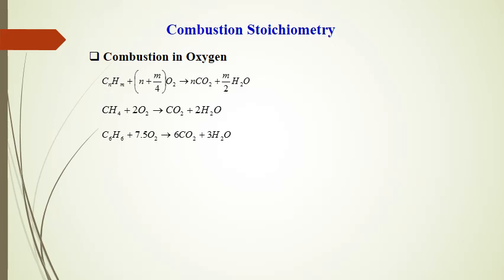Combustion stoichiometry explains the relations between the composition of the reactants — that is, fuel and air of a combustible mixture — and the composition of the products. Since these relations depend only on the conservation of the mass of each chemical element in the reactants, only the relative elemental composition of the fuel and the relative proportions of fuel and air are needed. If sufficient oxygen is available, a hydrocarbon fuel can be completely oxidized: the carbon in the fuel is converted to CO₂ and the hydrogen to H₂O. The overall chemical equation for complete combustion of one mole of hydrocarbon is shown, with examples for methane and hexane.